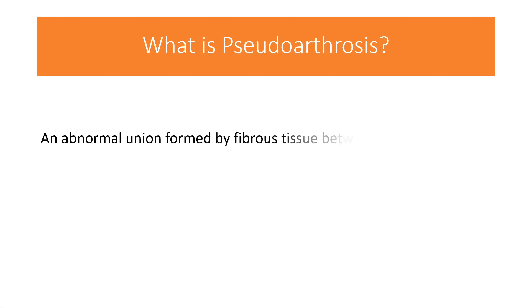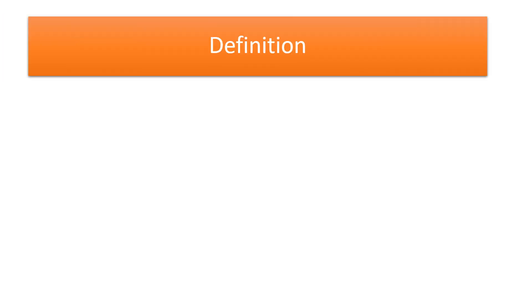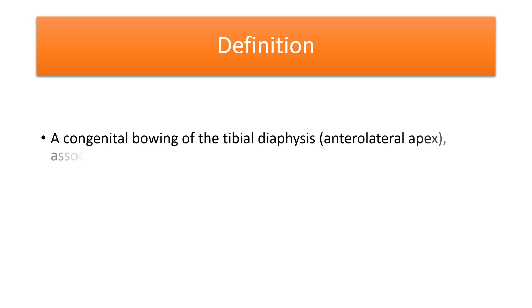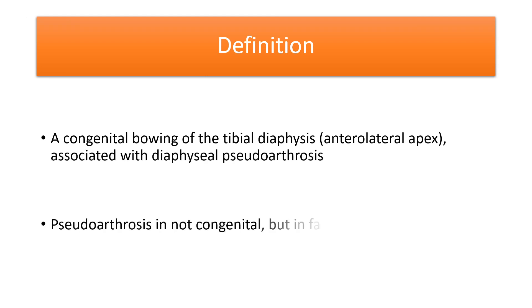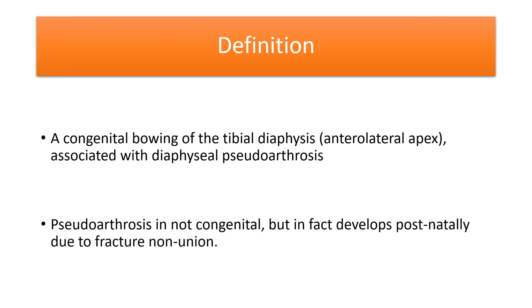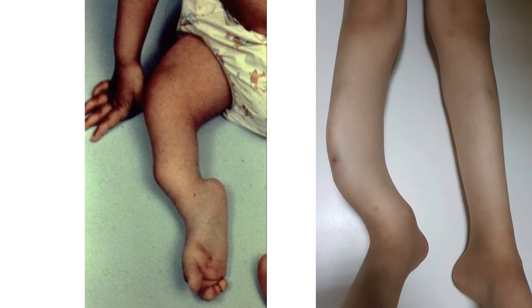Pseudarthrosis is an abnormal union formed by fibrous tissue between parts of a bone that has fractured. Congenital pseudarthrosis of the tibia is defined as congenital bowing of the tibial diaphysis with the apex directed anterio-laterally, associated with pseudarthrosis. The pseudarthrosis or fracture may not necessarily be present at birth but develops spontaneously due to fracture nonunion. A clinical photograph of the right leg shows bowing of the tibial diaphysis with the apex directed anteriorly and laterally.